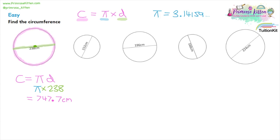Moving on to question two. Write down the formula: circumference is pi times the diameter. The calculation is pi multiplied by 152, so type that into the calculator. Rounding to one decimal place gives 477.5 centimetres.